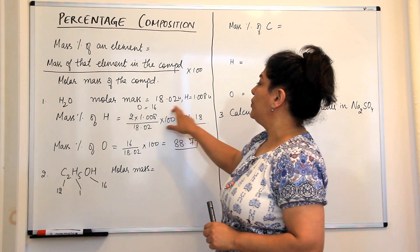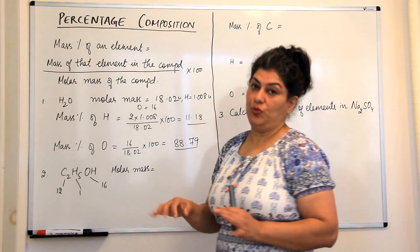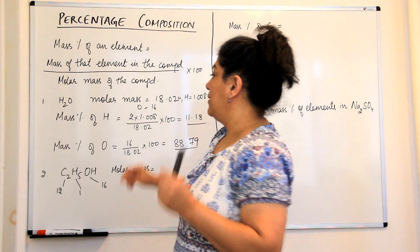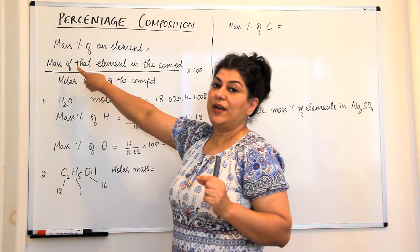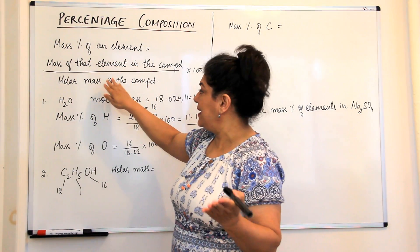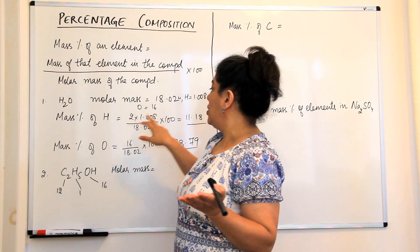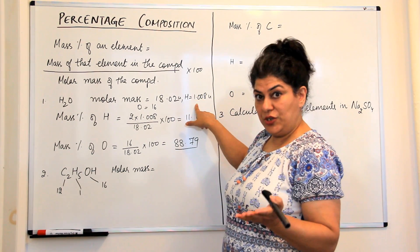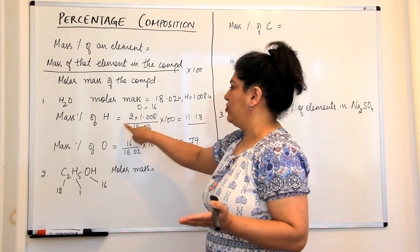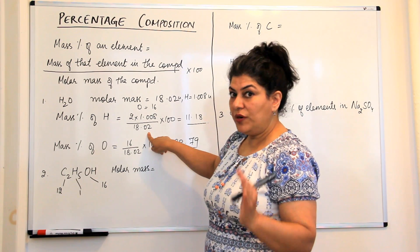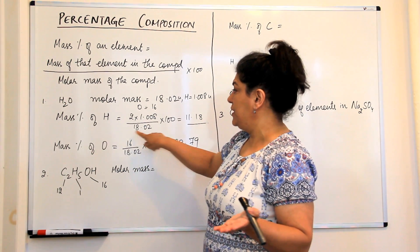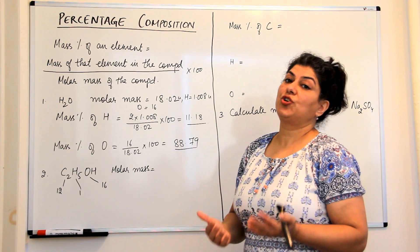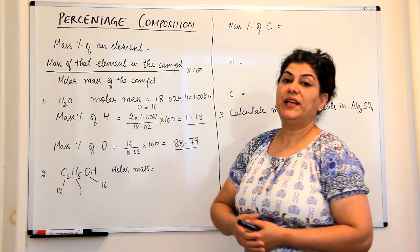To calculate the mass percentage of hydrogen, we know there are two hydrogen atoms, so mass of hydrogen is 2 × 1.008. Dividing by the molar mass of water, 18.02, and multiplying by 100 gives you the mass percentage of hydrogen, which is 11.18%.